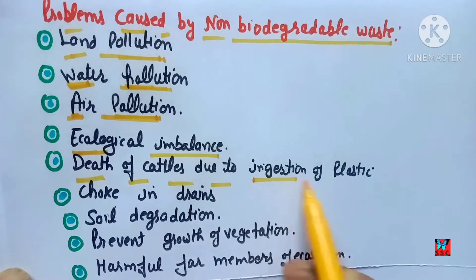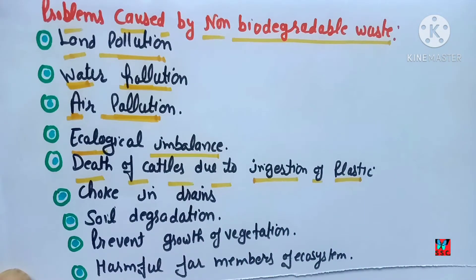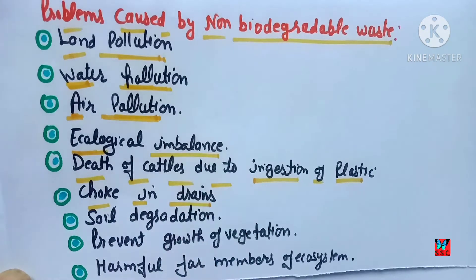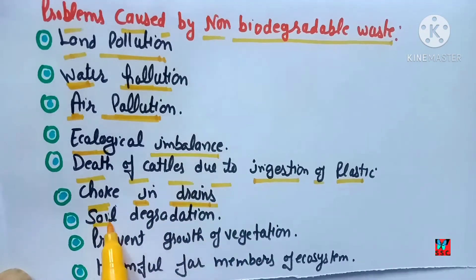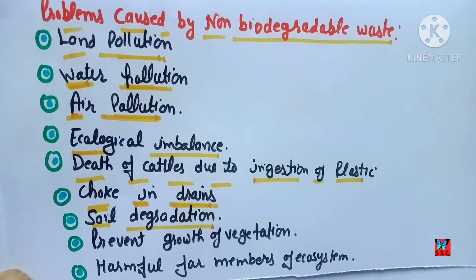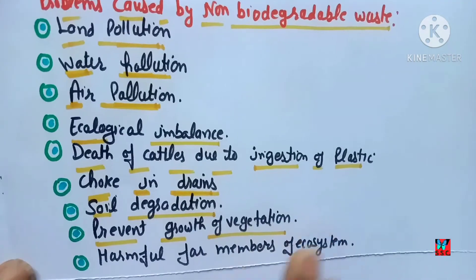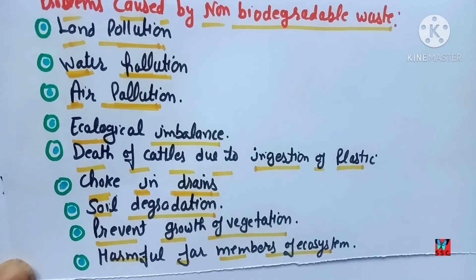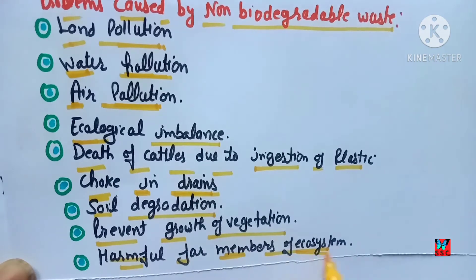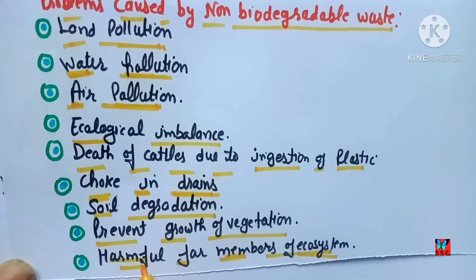Death of cattle — if animals, birds, or any creature eats plastic bags, it can cause death by choking. Choking in drains is another problem. Soil degradation — non-biodegradable waste reduces soil productivity and prevents the growth of vegetation. It is also harmful for all members of the ecosystem — humans, plants, and animals — and plastic waste badly affects everyone.